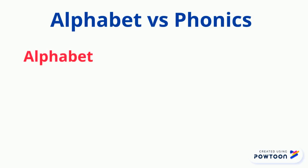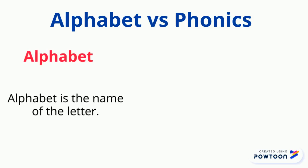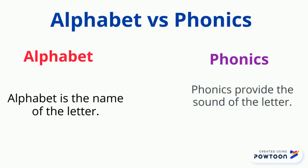Alphabet vs Phonics. The alphabet is the name of the letter — for example, A. The phonic provides the sound — for example, A. In this video, we will be focusing on the phonetic sounds of the letters.